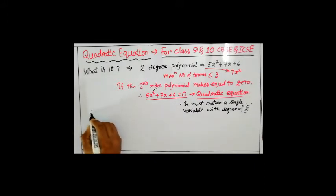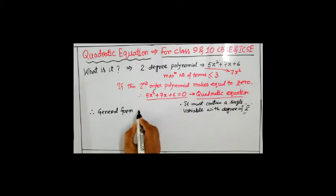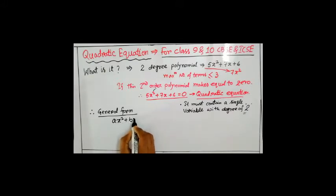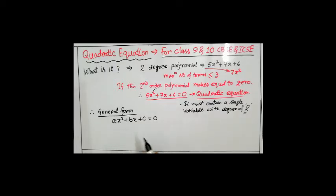If we come to a general form of a quadratic equation, it looks like this: ax² + bx + c = 0. You can use y, z instead of x. By convention, we are using a, b, and c as constant terms and x as a variable. Generally x, y, z are assumed as variables and a, b, c are assumed to be constants. That is the general form of a quadratic equation.